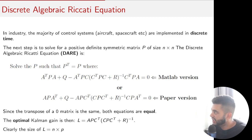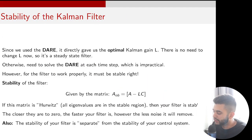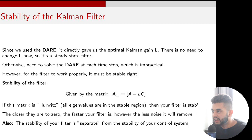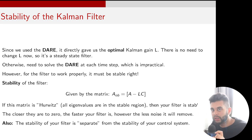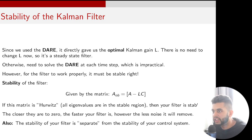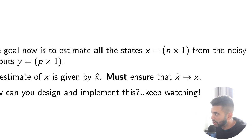We use a steady-state filter because we only compute one value of L. Solving the Riccati equation at every time step would be very time-consuming. The stability of the filter is given by A minus LC — this matrix must be a Hurwitz matrix, meaning it must be stable. The closer the eigenvalues are to zero, the faster your filter converges, but it won't remove as much noise. The stability of your filter is separate from your control system — this is called the separation principle.